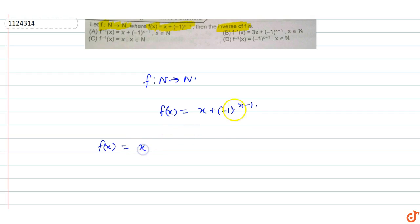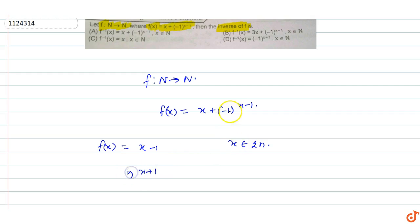So x belongs to natural numbers. Here the value of (-1) raised to power (x-1): if x is even, then (x-1) is odd, so (-1) raised to an odd power equals -1, making f(x) = x minus 1. If x is odd, then (x-1) is even, so (-1) raised to an even power equals +1, making f(x) = x plus 1.